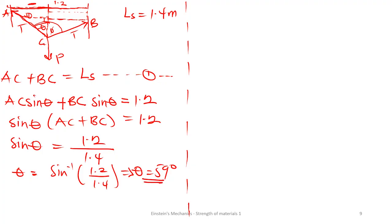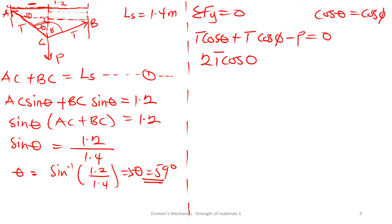So now we know theta. The question is asking us to find the value of P. Now we saw that the only equation linking P is the summation of force on the Y direction equal to 0, where we had this expression as T cos theta plus T cos phi minus P equal to 0. Now cos theta and cos phi are the same because the angles are the same. So 2T cos theta minus P is going to be 0. If I make P the subject, that is going to be P equals 2T cos theta.